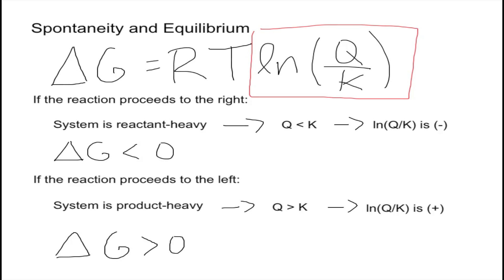We're going to have two different cases: when the reaction proceeds to the right, when it proceeds to the left, or when it has reached equilibrium. Case number one: when a reaction proceeds to the right, the system is going to be reactant heavy. When the system is reactant heavy, Q is less than K, so Q is smaller. In our equation, the numerator is less than the denominator, giving us a negative logarithm value, meaning Delta G is also negative.